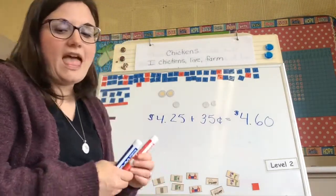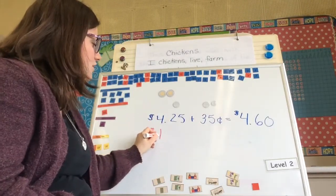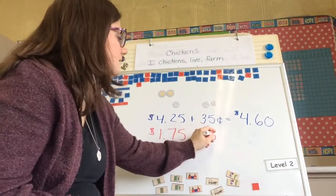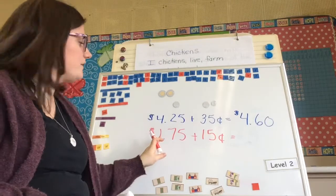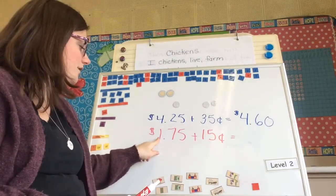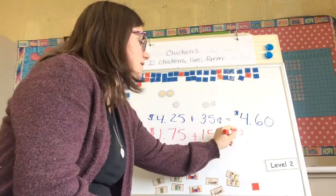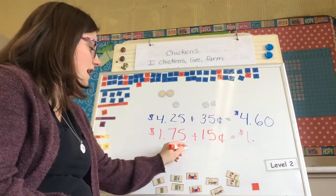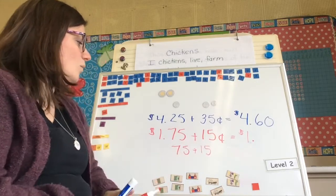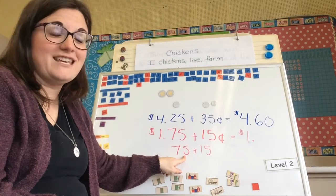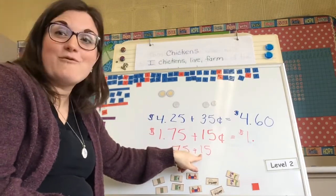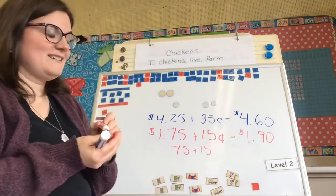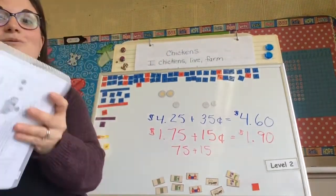Now let's do another one. Without the money, I'm going to tell you the amount. I have $1.75, and this time I would like to add $0.15. So I have $1.75 and I want to add $0.15. Let's look at the dollar — I have $1 here, I don't have any there, so let's start with our $1. Now $0.75 plus $0.15: if I take five more, what's five more after $0.75 counting by fives? $0.80. And then $0.10 left gives me $0.90. So I have $1.90 total.